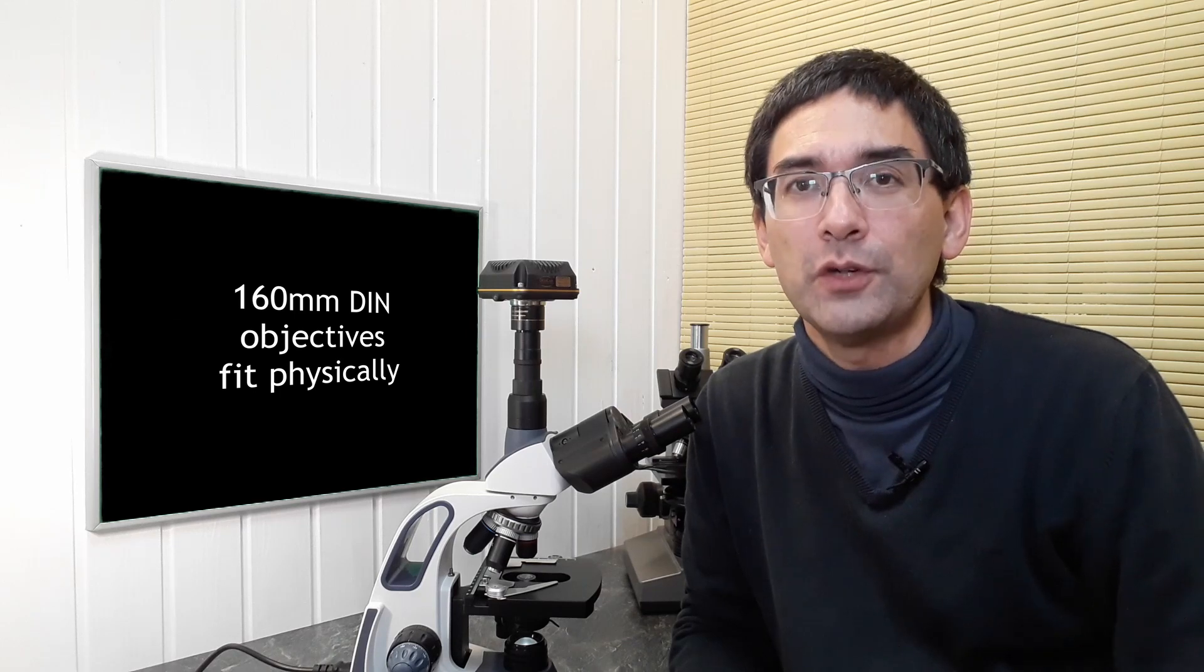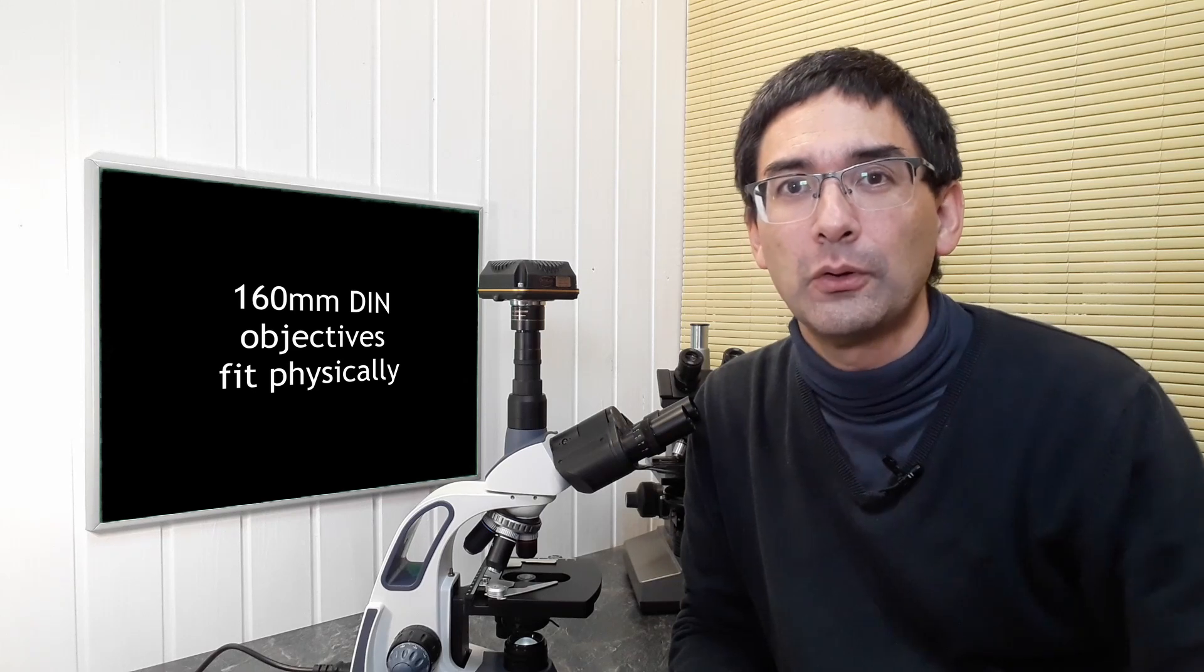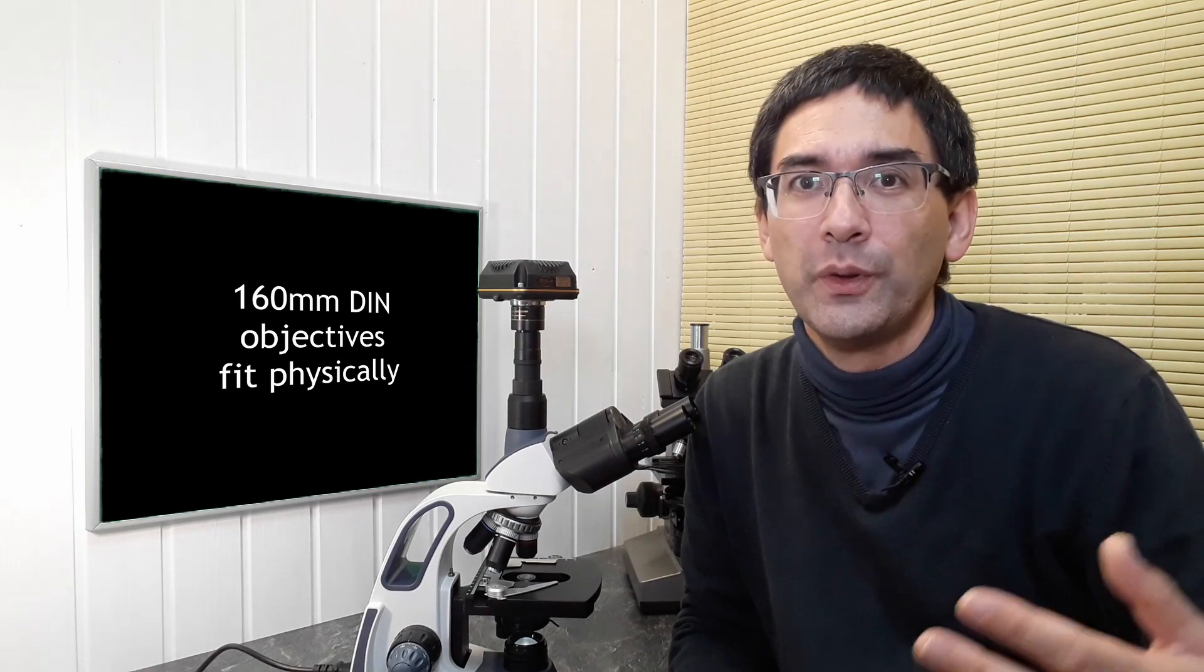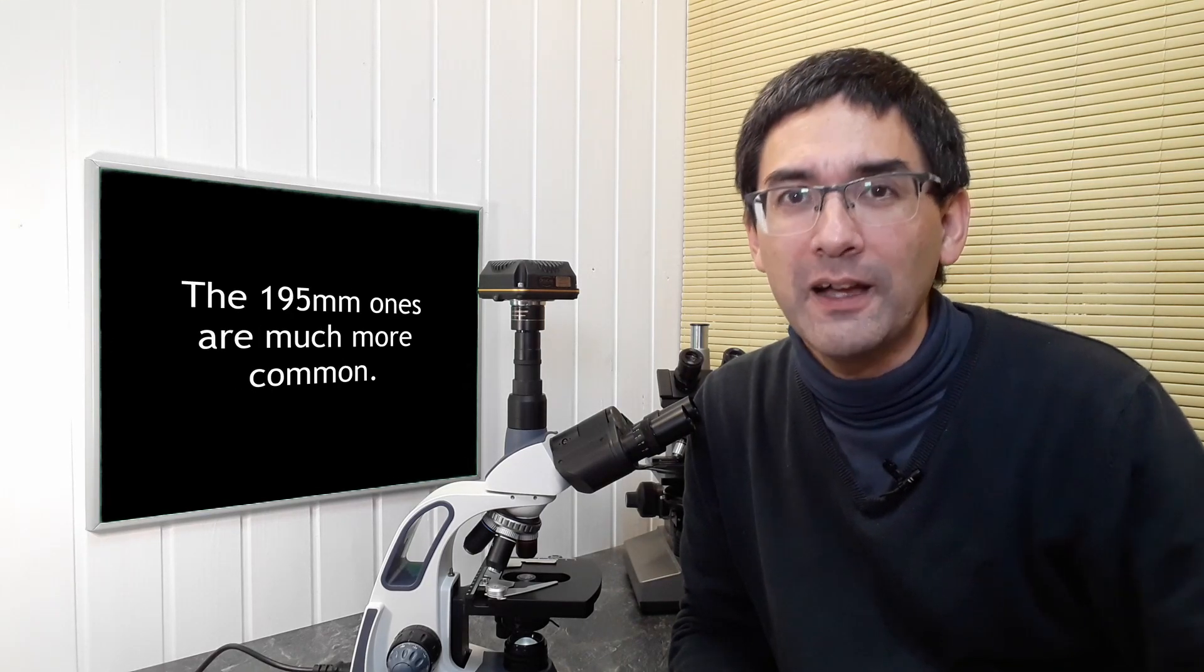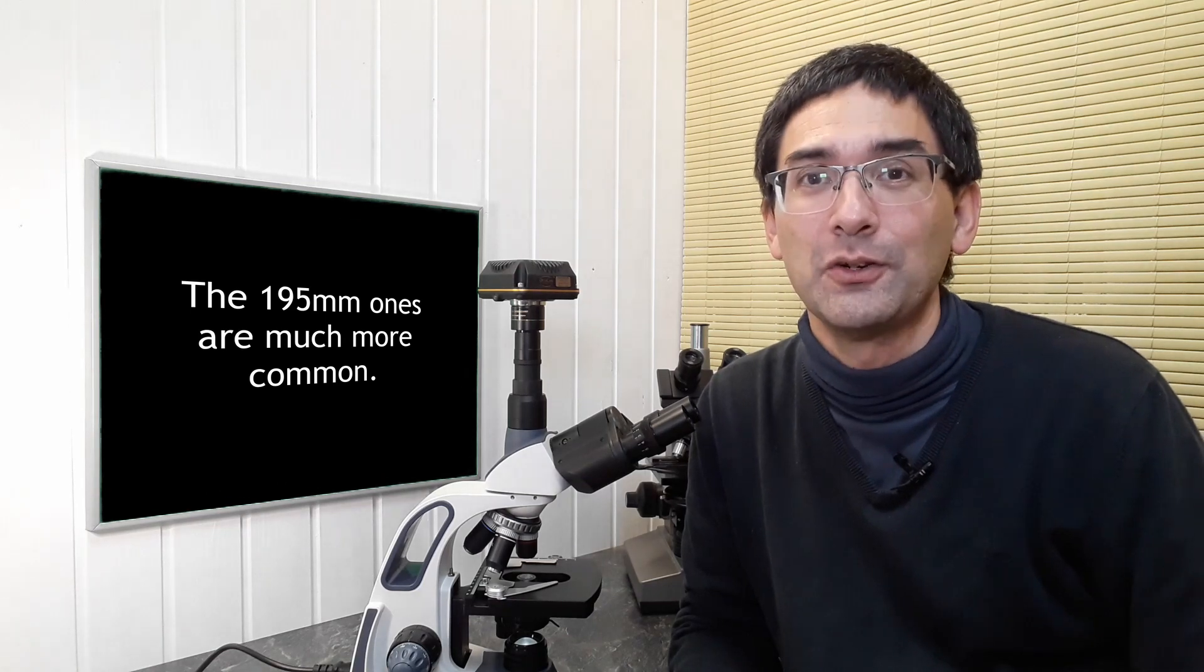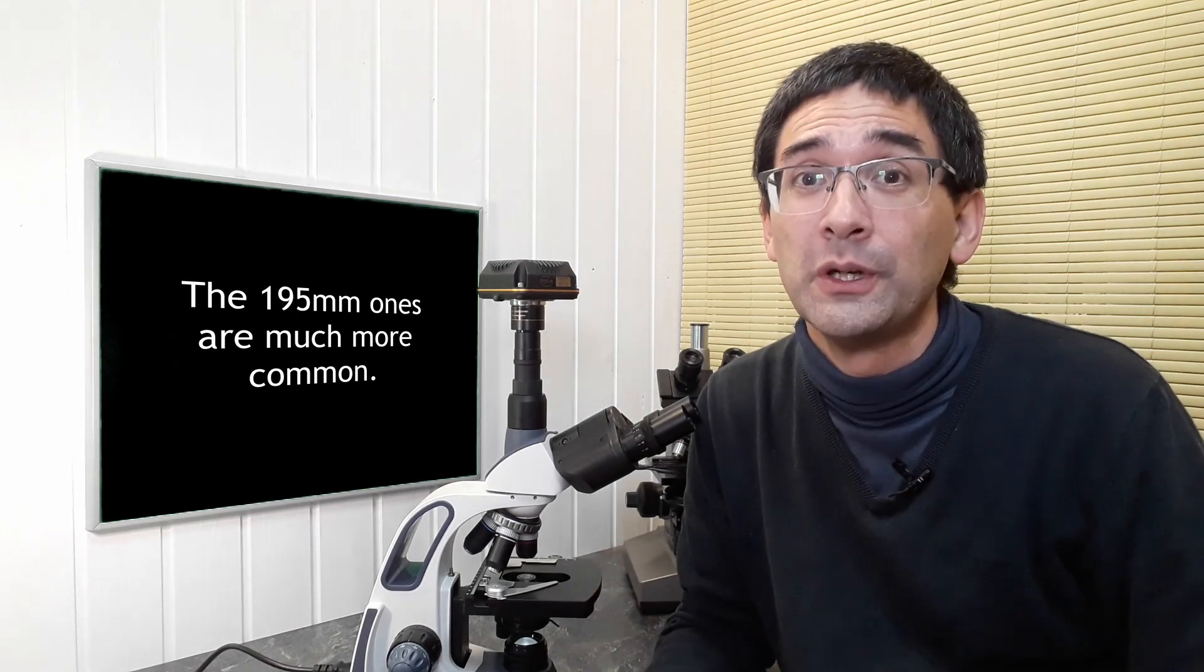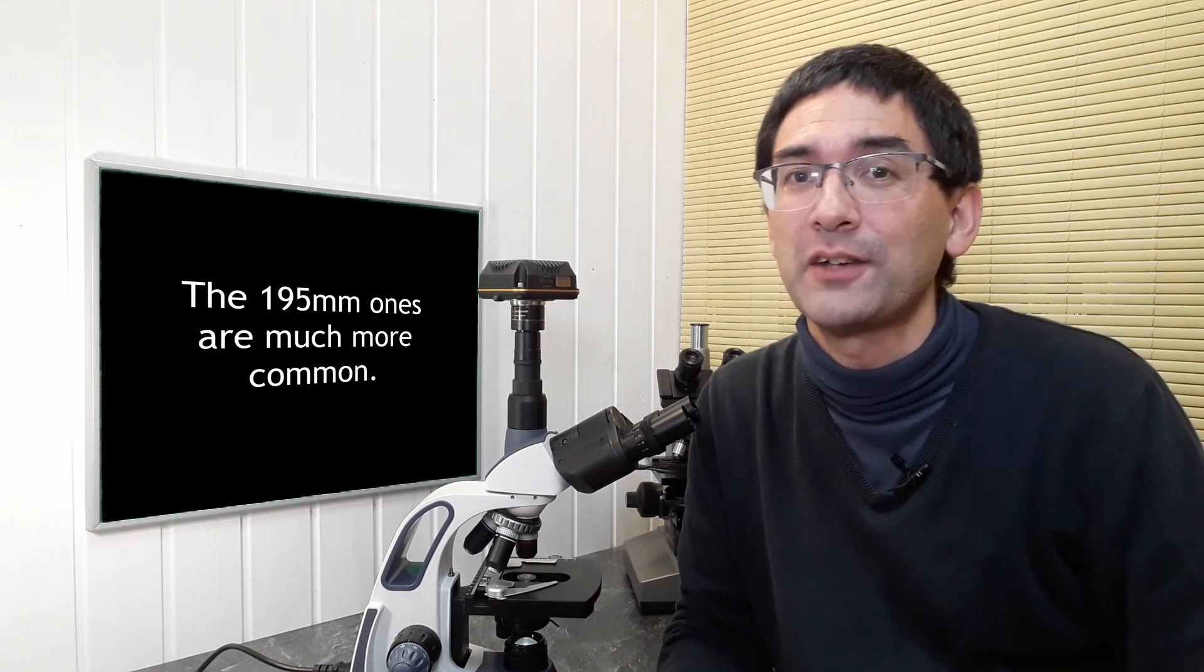Even with a 160 millimeter standard, there are the so-called long barrel and the short barrel objectives, or those with a conjugate distance of 195 millimeters, or those with a conjugate distance of 185 millimeters. These are a little bit shorter, and you cannot mix those two, even though both of them have a 160 millimeter standard.